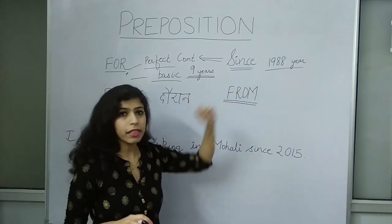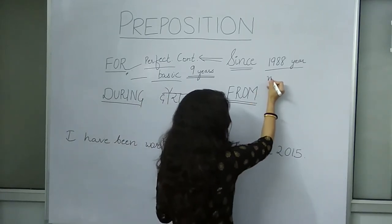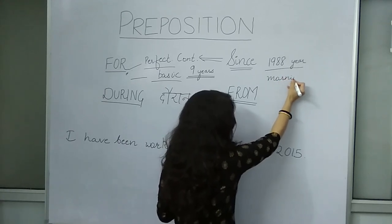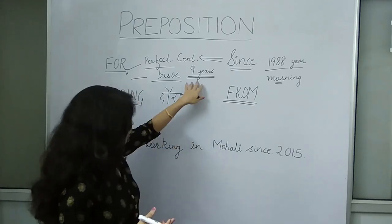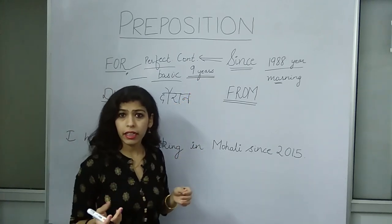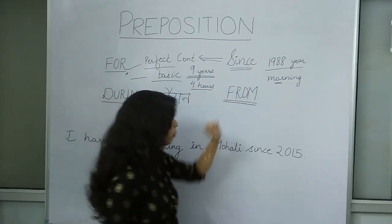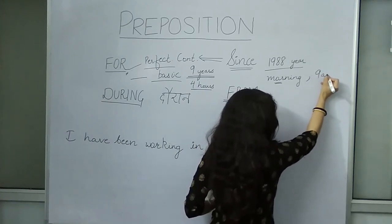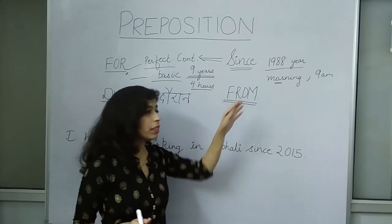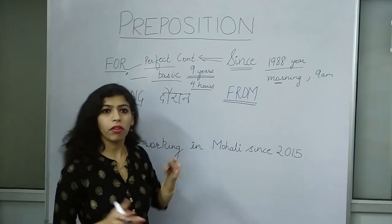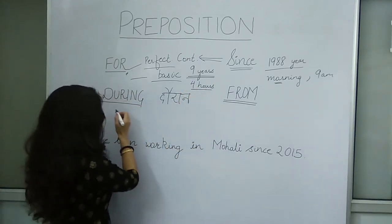I have been studying since morning. If we have to use 'morning' or 'afternoon,' we use 'since morning' or 'since evening.' But compare: 'I have been studying for 9 hours' or 'for 4 hours' — when we are talking about a number. If you tell me '9 a.m.,' that is a specific point, so I will say 'since 9 a.m.' So: 'I have been studying since 9 a.m.,' 'I have been studying since morning,' and 'I have been studying for 4 hours.' This is the difference between since and for.